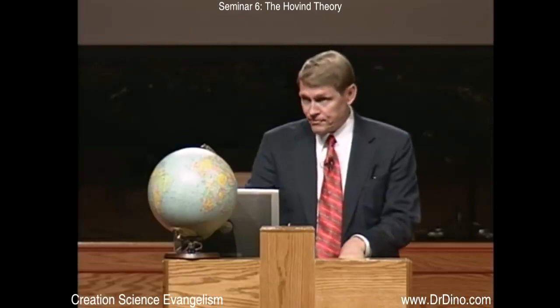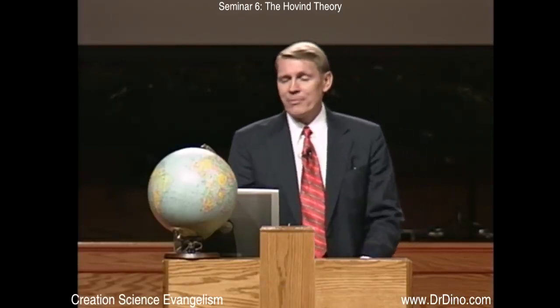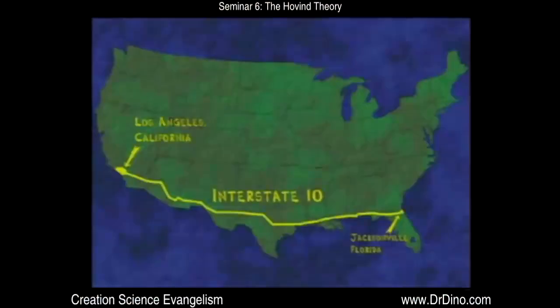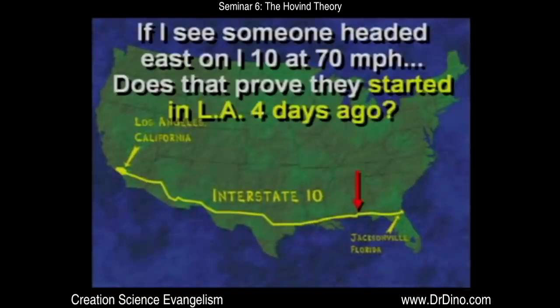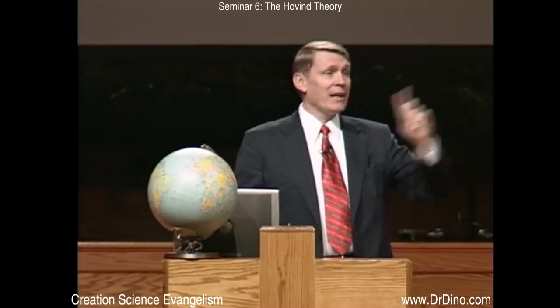I think students should be told there are other options than what they're being taught in school. I live right by Interstate 10 in Pensacola, Florida, which runs all the way from Los Angeles to Jacksonville. If I see somebody headed east at 70 miles an hour, does that prove they started in Los Angeles four days ago? No — they might have just got on at the last exit. Just because we see these continents moving a little bit today does not prove anything long-term historically. Don't fall for that propaganda. The continental drift theory is designed to avoid two problems for the evolutionists: the magnetic field is getting weaker, and there's very little sediment in the ocean. Another explanation might be that the Bible is right and the earth is not billions of years old.